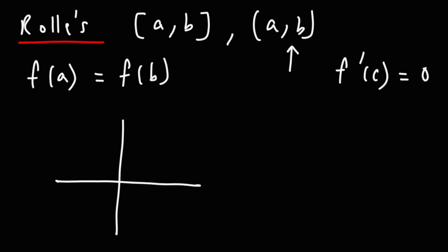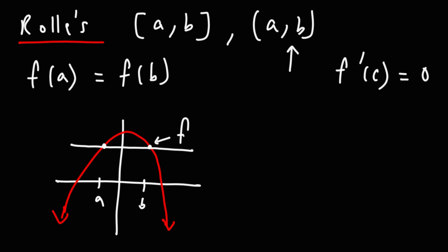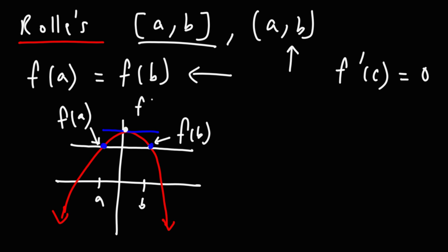Here's a good example. If we have a graph where point A and point B have the same Y value, then F of A equals F of B. Because the endpoints of the interval are equal, at some point between A and B there's going to be a horizontal tangent, and at that horizontal tangent F prime of C will be zero. C is basically the intersection of the curve and the horizontal tangent, and the derivative at that point will be zero. That's the basic idea behind Rolle's theorem.